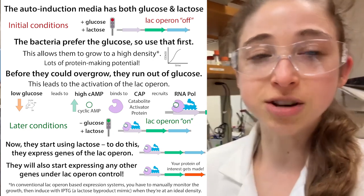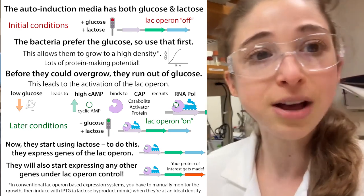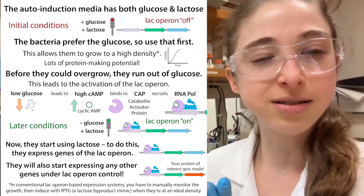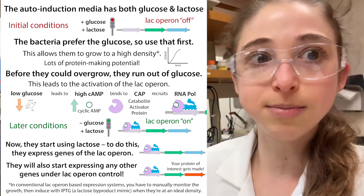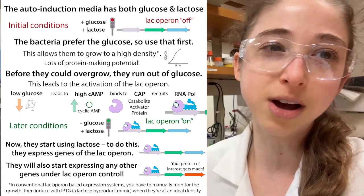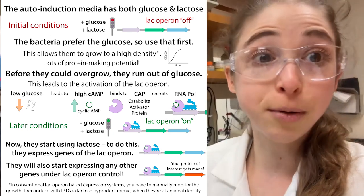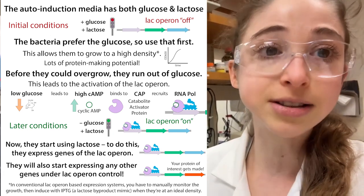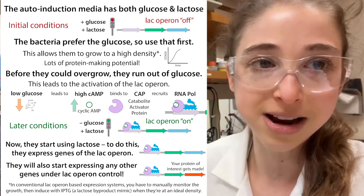Autoinduction media basically contains both glucose and lactose — we're using actual lactose here, not the IPTG mimic. You might ask: why don't the bacteria just make the protein if you're giving them lactose? Because you also give them glucose. If there's glucose, they'll prefer it and use it first. Then when they run out of glucose, they'll switch to the lactose because there's lactose present.